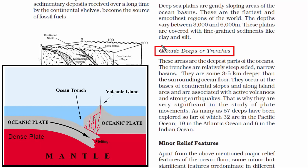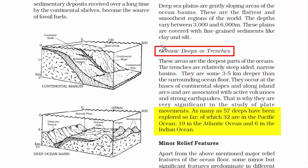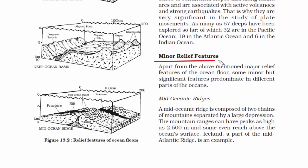In subduction, the dense plate moves under the lighter plate, making the sea floor and outermost crust bend and form a V-shaped depression. So far, 57 deep oceanic trenches have been explored — 32 are in the Pacific Ocean, 19 in the Atlantic Ocean, and 6 in the Indian Ocean.